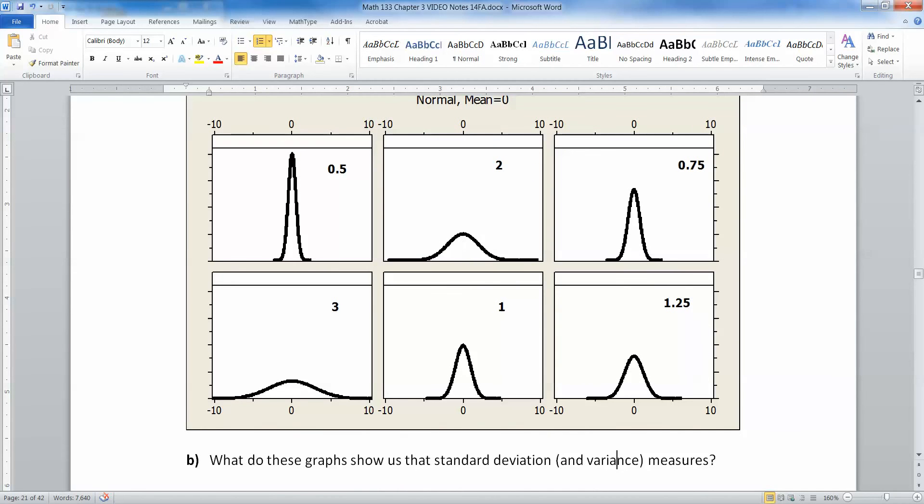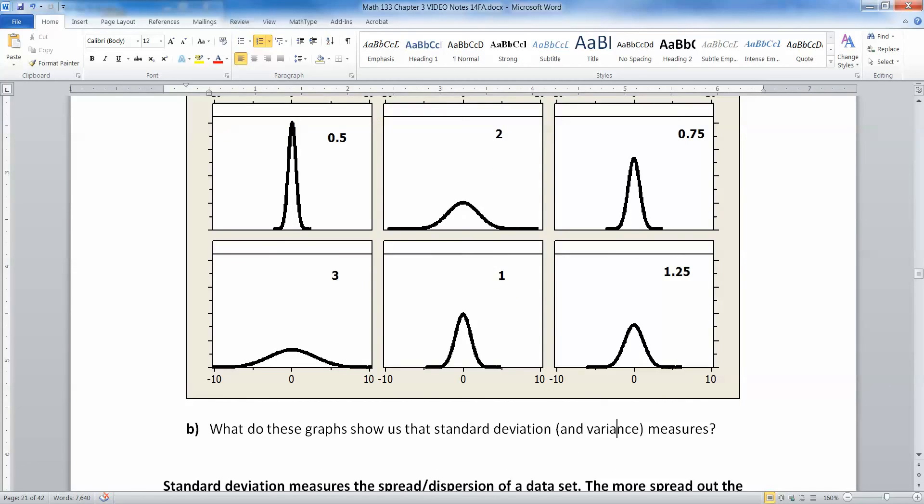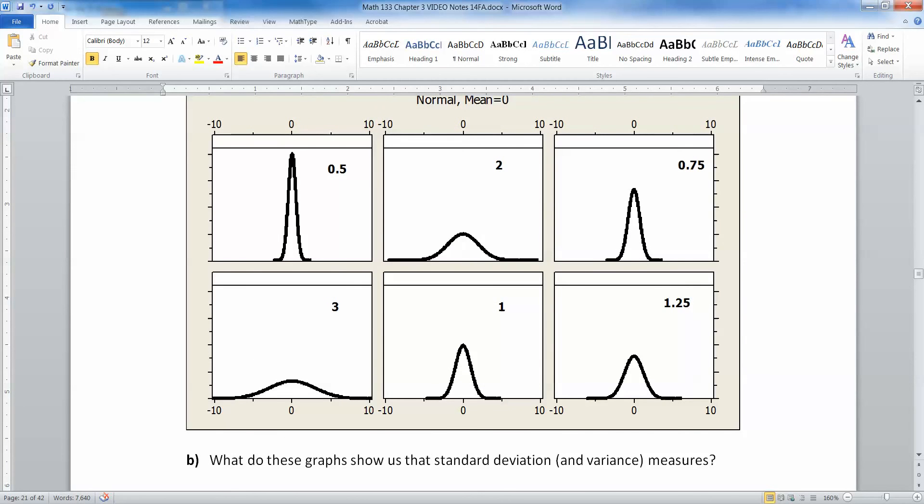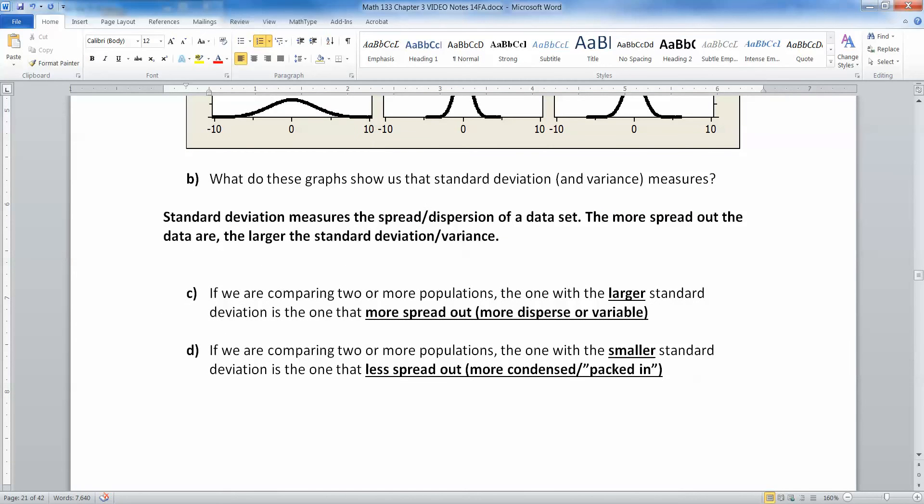So then what do these graphs show us that standard deviation measures? And we said it before, but we're going to say it again. Standard deviation measures the spread of your data set. The more spread out your data are, the larger your standard deviation variance. And I say both of them because, quite frankly, they both measure the same thing. They both measure how spread it out. It's just that variance squares it because that's more convenient later on. So if you see your data way spread out, that's going to be a bigger standard deviation. If you see your data really packed in, really tight, condensed in, that's going to be a very small standard deviation, which is what I said down here.